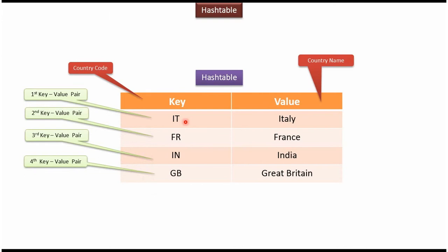Each row is called a key value pair. This is the first key value pair, second, third, and fourth key value pair. Each key value pair is also called an entry.